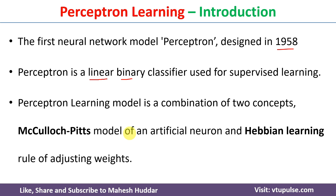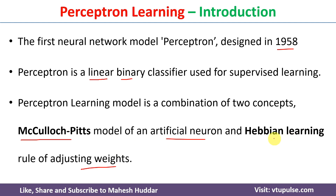Perceptron learning model is a combination of two concepts. The first one is the McCulloch-Pitts model of an artificial neuron, and the second is Hebbian learning for adjusting the weights. We need to adjust the weights so that we can classify all the examples correctly, and the Hebbian learning concept is used for that weight adjustment.